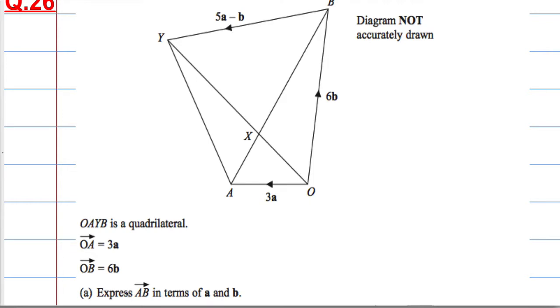And for part A, we're asked to express the vector AB in terms of a and b. So what is this vector here? So I'm starting at A, and I want to end up at B. Now, if we use what we've been given, I would like to go this way, and then this way.